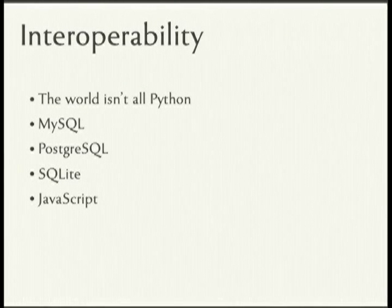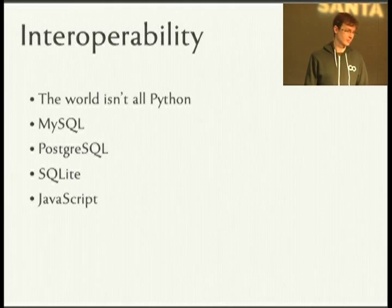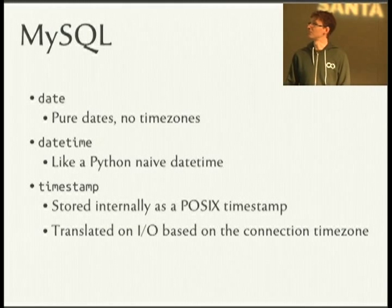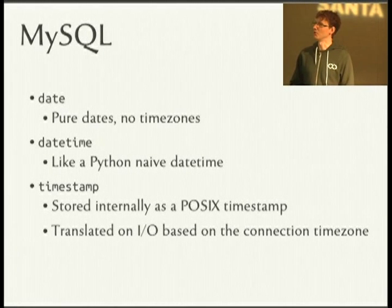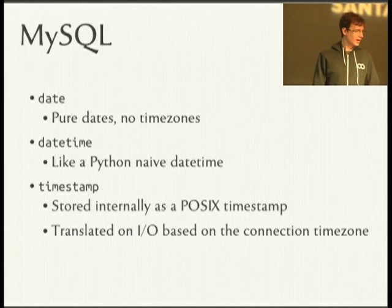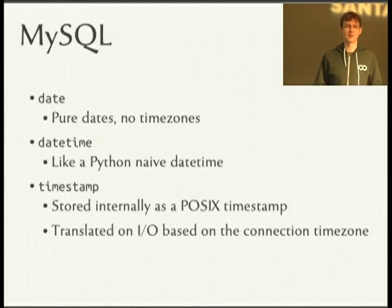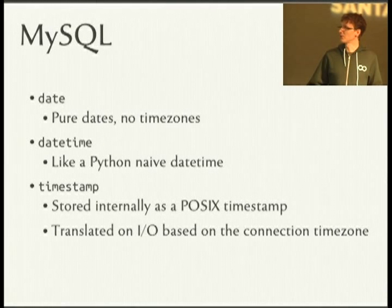Interoperability: the world is not all Python. There's MySQL, Postgres, SQLite, and JavaScript, which a lot of us have to deal with. MySQL has dates — pure dates, no time zones — which is fairly easy. Datetimes are like a Python naive datetime; it just stores a string. The SQL standard treats a lot of datetime-like things just as strings, which can be surprising. Timestamps are internally stored as POSIX timestamps but translated on I/O based on the connection time zone. You can't get two time zones' worth of information out of the database, so you really just want to set the connection time zone to UTC.